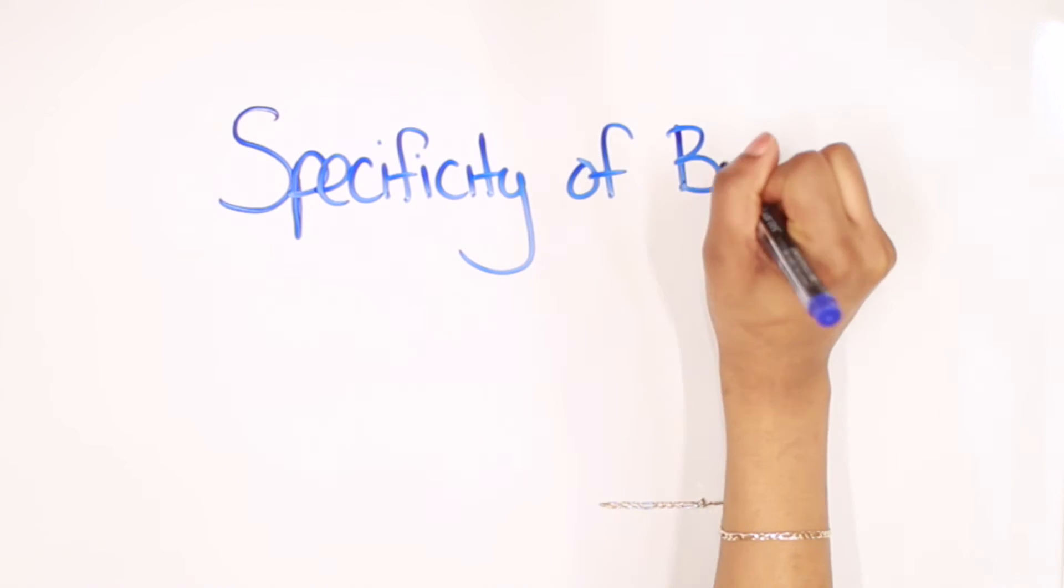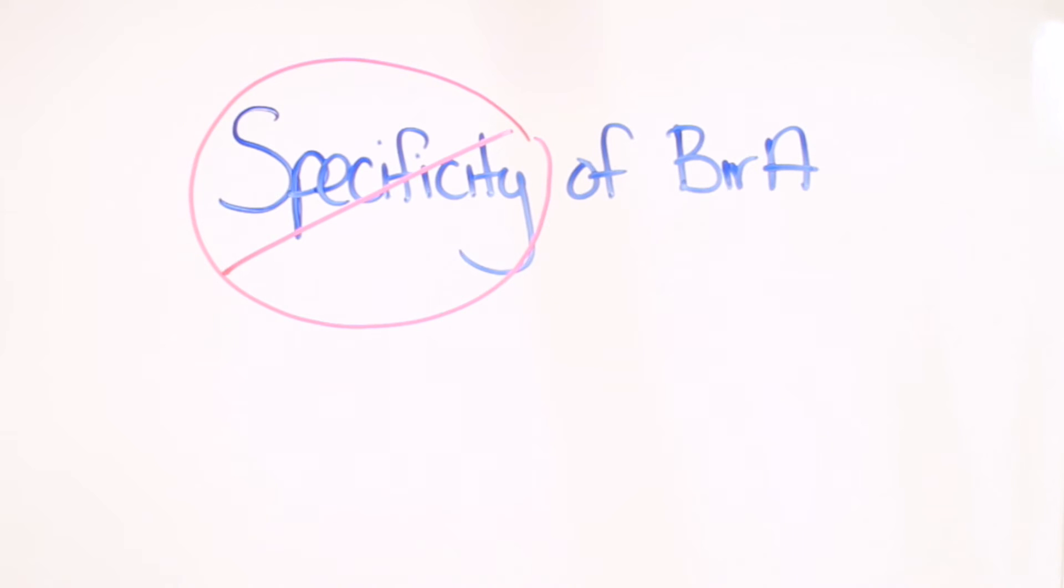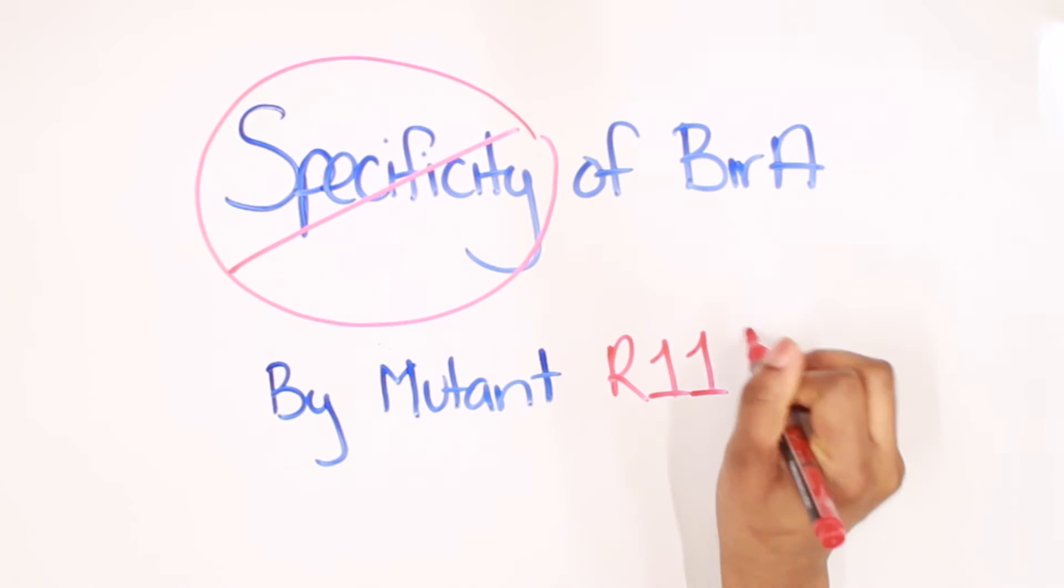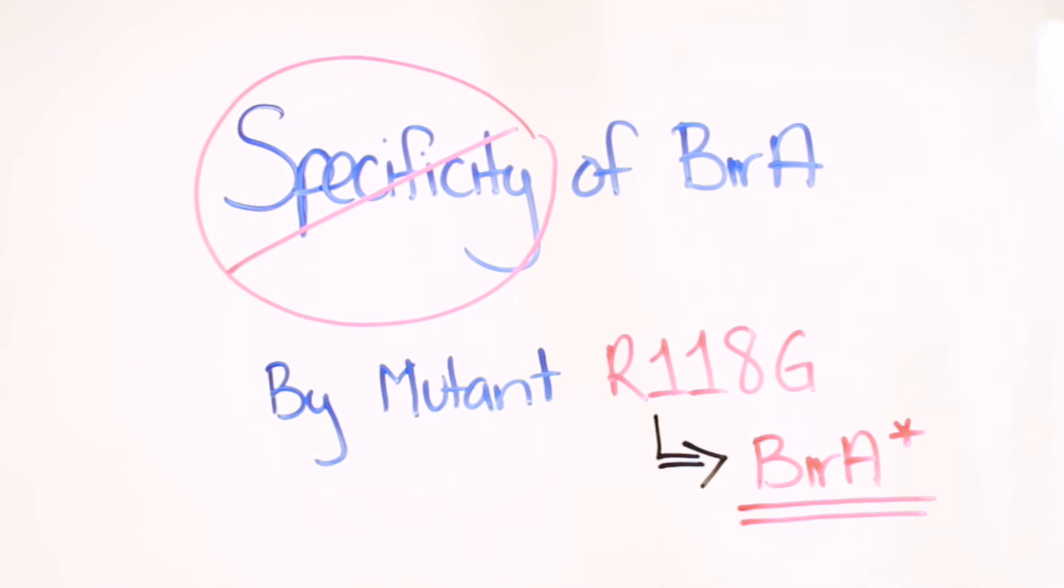Kwon and Beckett overcame the specificity of BirA by synthesizing a mutant, R118G, that has the capacity of prematurely releasing biotin in its active form. This mutant of BirA has been called BirA star and is what was used to develop the BioID technique.